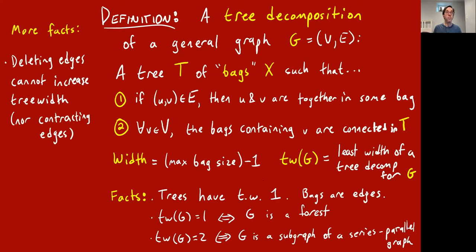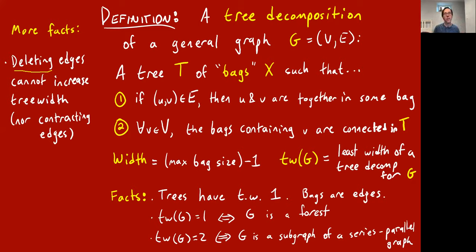One more fact: if you take a graph with a certain tree width and delete some edges, it cannot increase the tree width. This is easy to see — if you have a tree decomposition and delete some edges from the graph, your tree decomposition is still totally fine: the deleted edges used to have to be in a bag and they're still in some bag, but they don't need to be anymore.